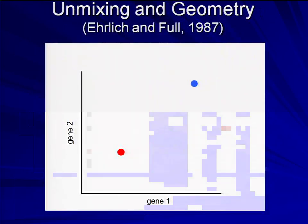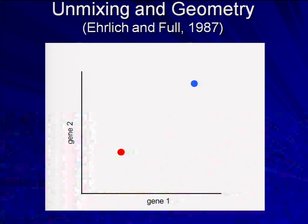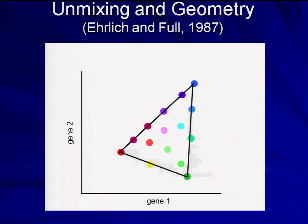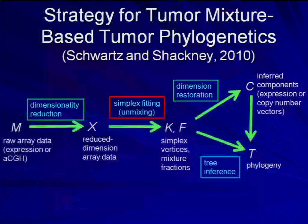The unmixing approach can be represented as a problem in geometry. If you have a couple of pure cell types in your sample, their positions based on expression levels of different genes can be represented as a line segment between two pure modes. In principle, you can find the line segment and infer that the pure modes lie at approximately the ends of that segment. In higher dimensions, three pure modes give triangles, and in general, K states yield a K-vertex simplex embedded in K-1 dimensional space.